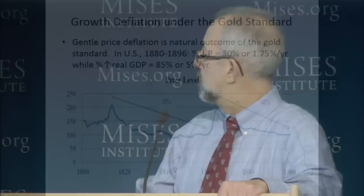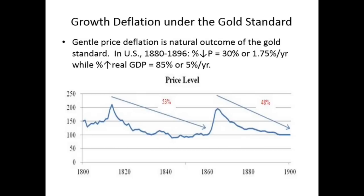Here's the price level from 1800 to 1900. In 1800 it's at 150; by 1900 it's fallen 50%. Notice the increases: one increase occurred during the era of the First Bank of the United States, the first quasi-central bank, which printed paper money like crazy. The second increase occurred during the Civil War when we had gone off the gold standard. After we returned to the gold standard, we began again to get a decline in prices. Prices rose less than 1% per year from 1900 to 1914 as it became more technologically feasible to extract gold from very low-grade ore.